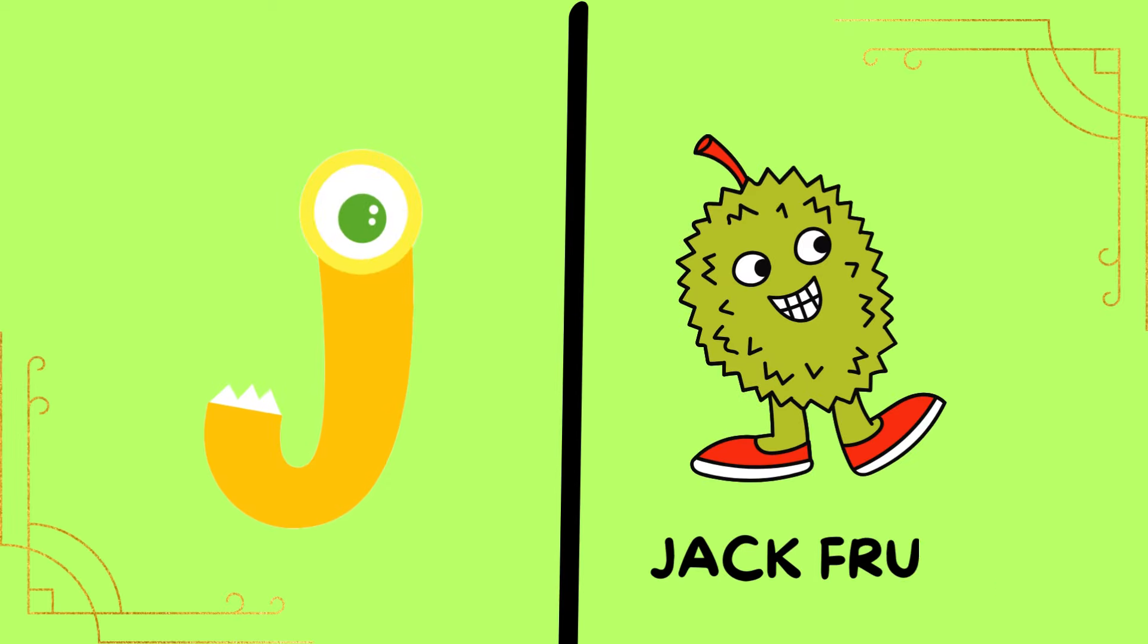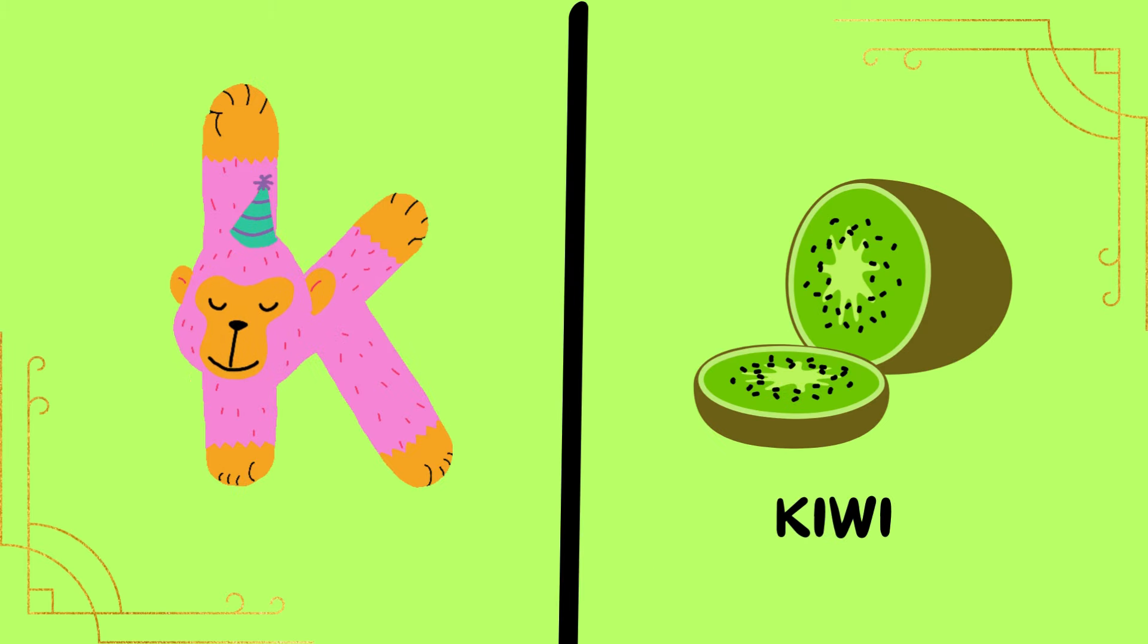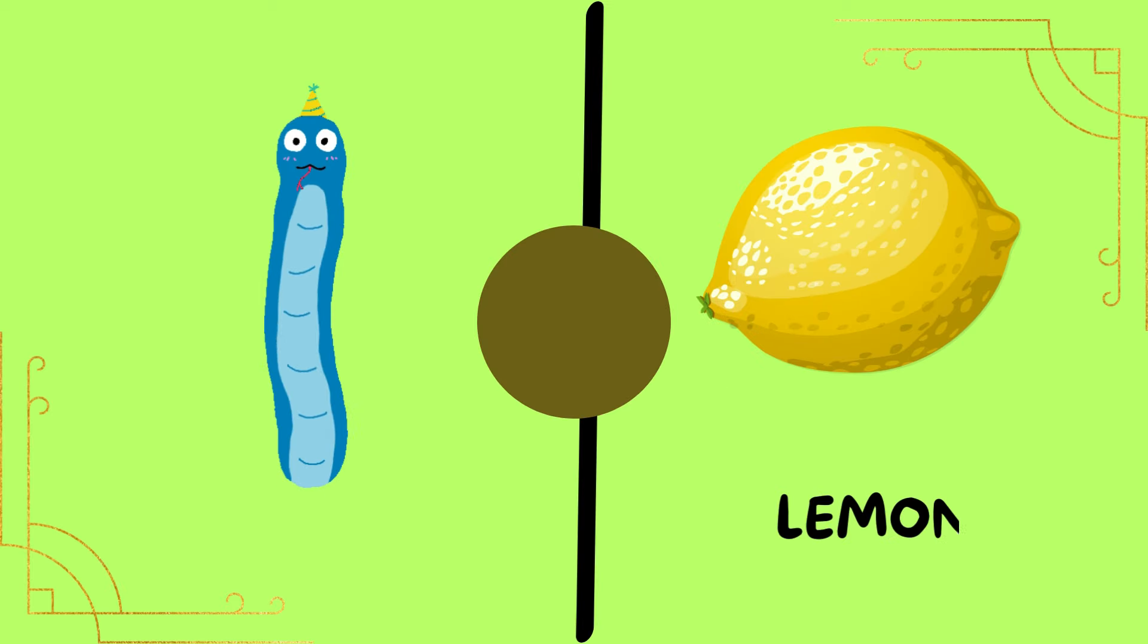J is for jackfruit. J is for jackfruit. K is for kiwi. K is for kiwi. L is for lemon. L is for lemon.